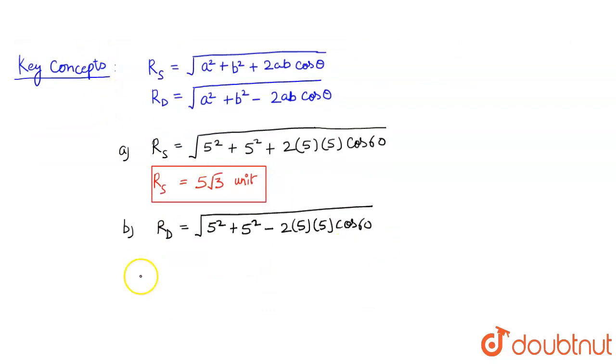we will get Rd, the resultant of the difference, as 5 units.